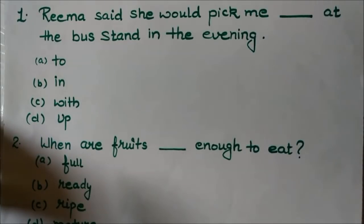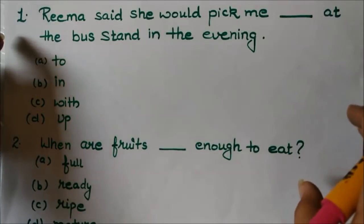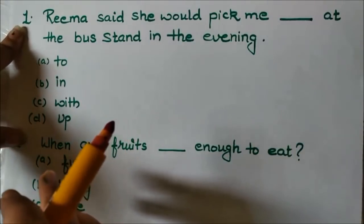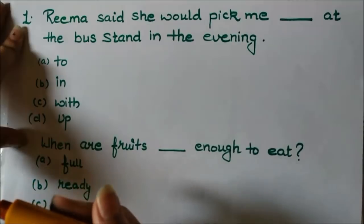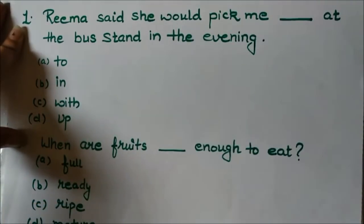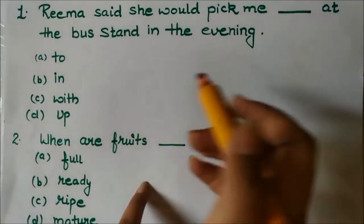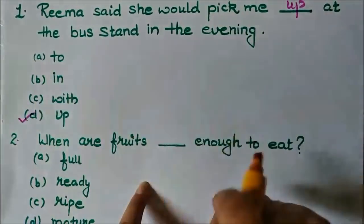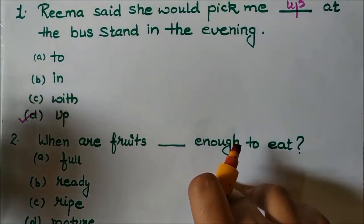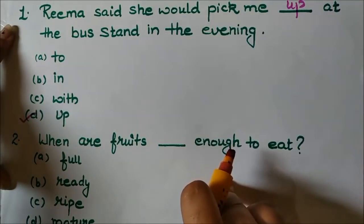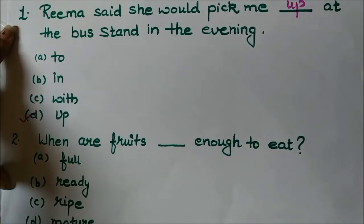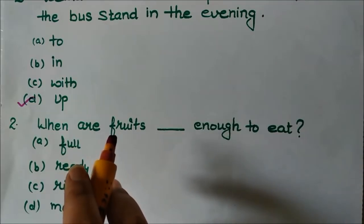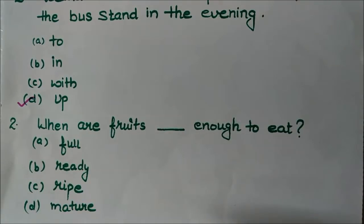Question number one: 'Reema said she would pick me ___ at the bus stand in the evening.' This is an easy one. 'To pick up' means to take somebody from some place. So the answer is 'pick me up.' Reema said she would pick me up at the bus stand in the evening.